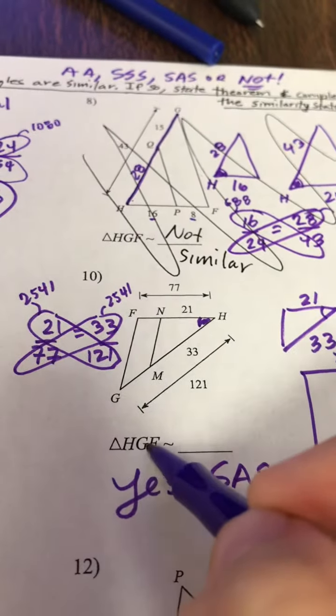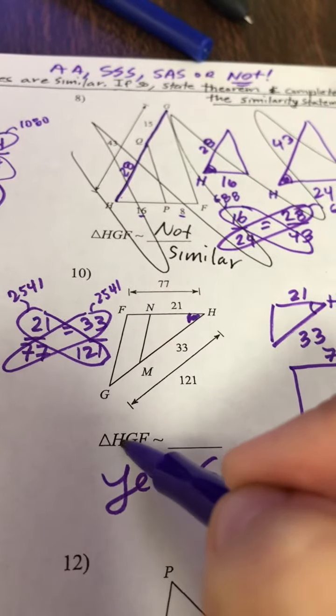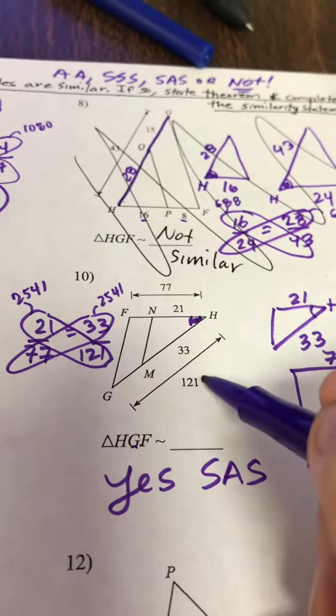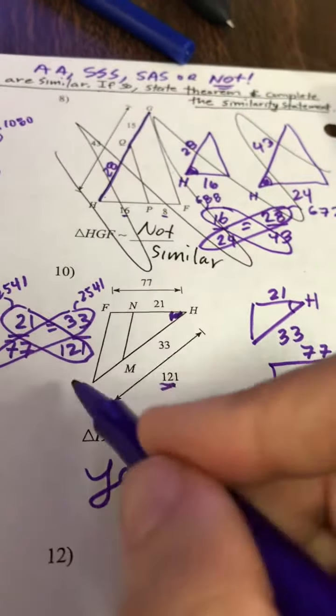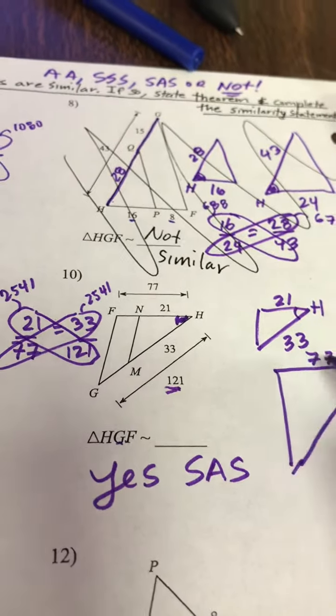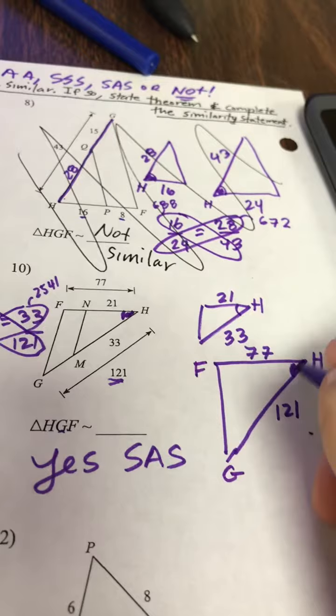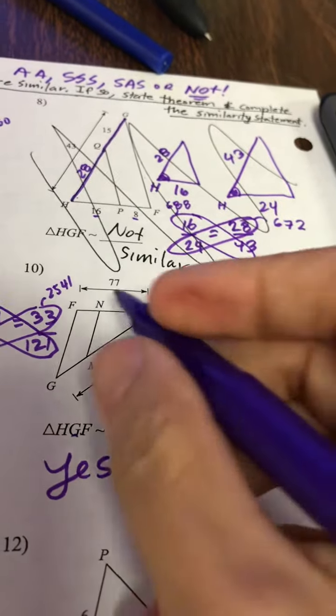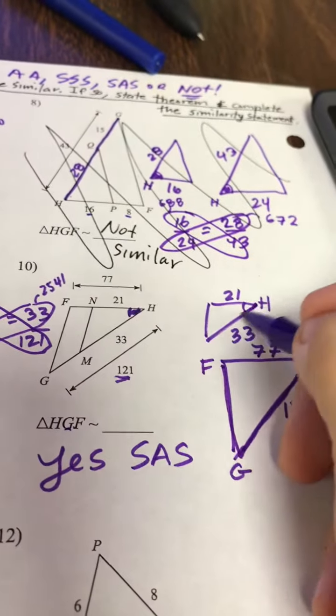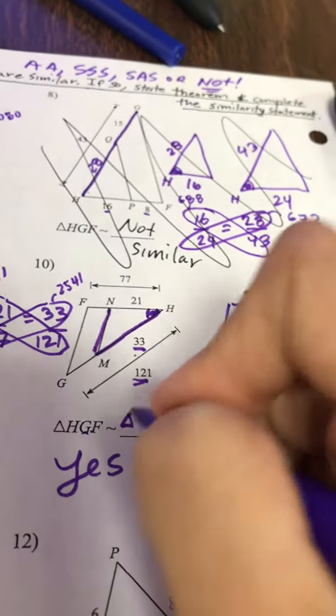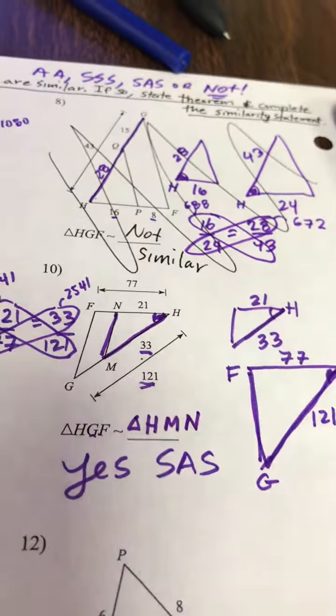Now how did they name it? So it looks like they named the mom HGF. So they went across the big side and then across the side they didn't know about. H, G, F. Across the big side and the side they didn't know about. So I'm going to do the same thing here across the big side, 33, and then the side I don't know about. H, M, N.